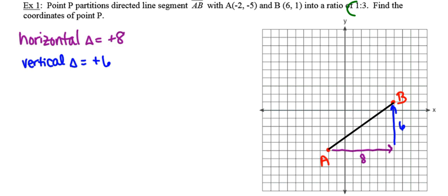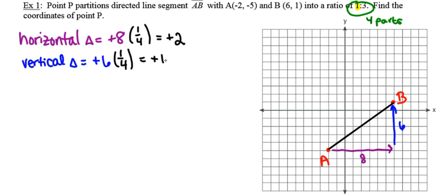The next thing I'm going to pay attention to is this ratio of 1 to 3. I'm going to think about breaking this line segment up into 4 parts — I got 4 by adding the 1 and the 3 together. If it had said 2 to 3, it'd be 5 parts; 3 to 5 would be 8 parts. I want to move 1 out of those 4 parts from A to B, so I multiply each change by one-fourth. So 8 times one-fourth is plus 2, and 6 times one-fourth is plus 1.5.